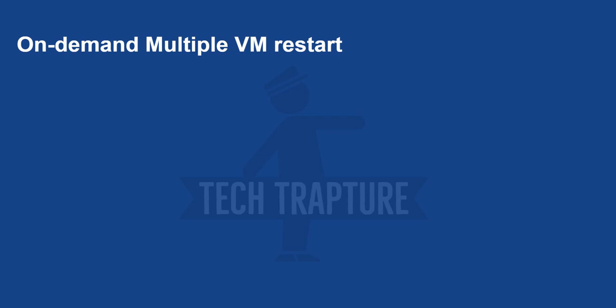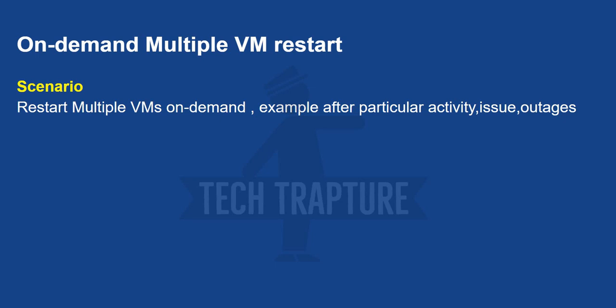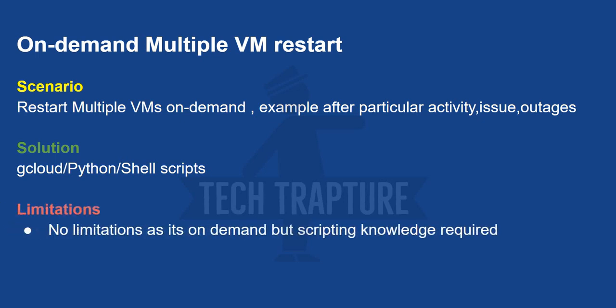For on-demand multiple VM restart — such as after a release when you need to restart all servers — the solution is to use gcloud commands. You can create a script in Google Cloud, a shell script, or a Python script. Since it's on-demand, you don't schedule it. The limitation is that it requires programming knowledge, but it efficiently handles restarting hundreds of machines.